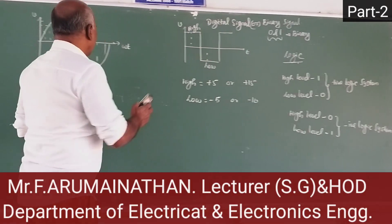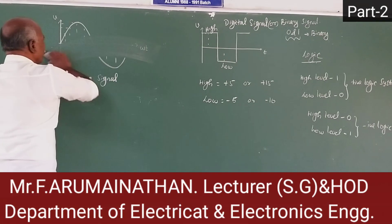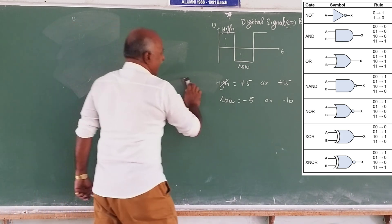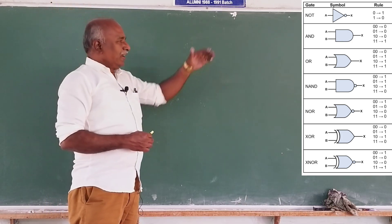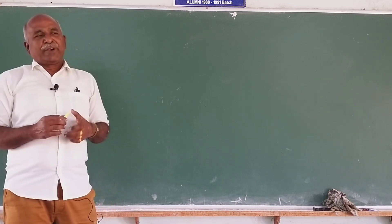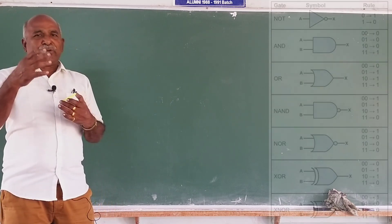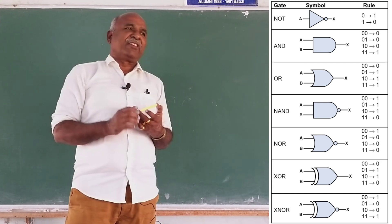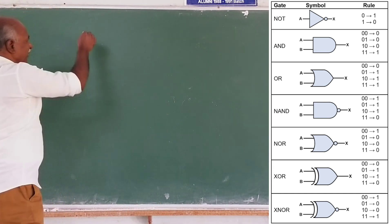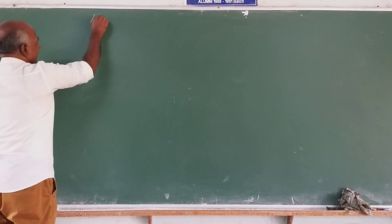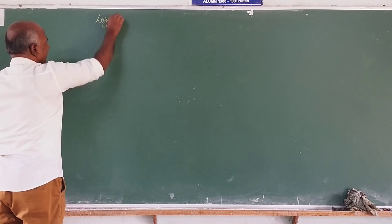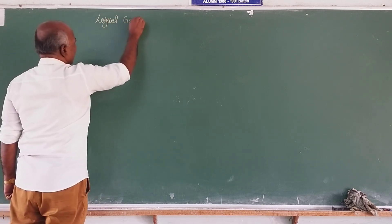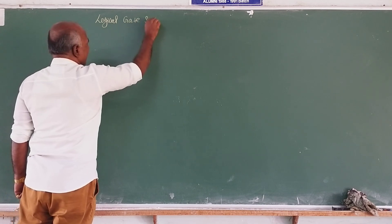In digital signal processing, we are going to implement the gate circuit. In the logic system, we are going to implement the gate circuit. Logical gate circuits — in the logical system, a logical gate circuit uses binary numbers to analyze the circuit.